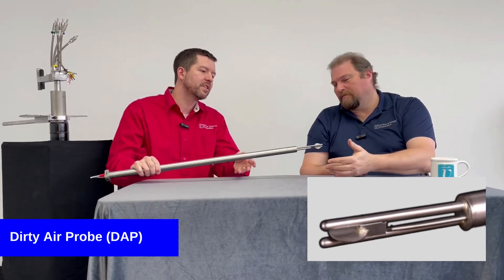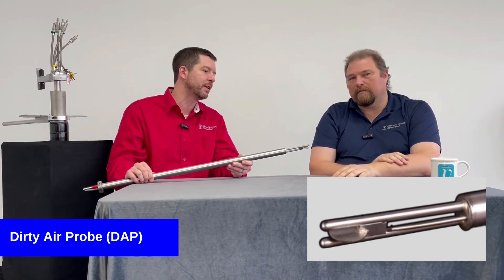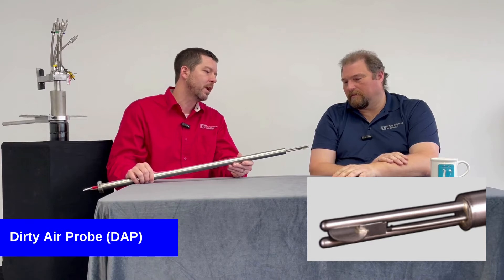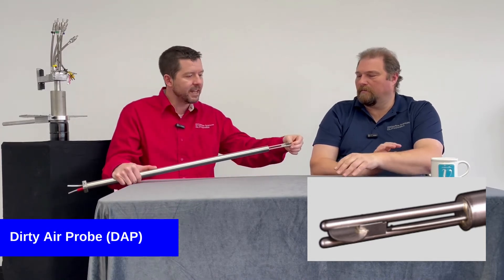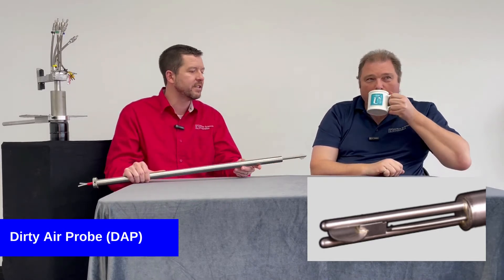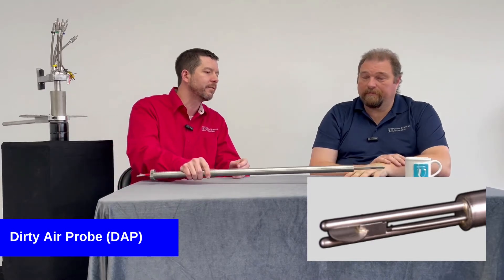Well, this probe works similar to an S-type or a standard pitot probe, where it allows you to determine the velocity by measuring pressure differential. The pressure measurement holes for this one are actually on the inside of these tubes, which makes it very resistant to plugging, and it allows you to use it in dense particulate flows.